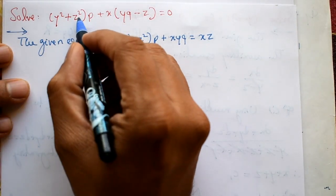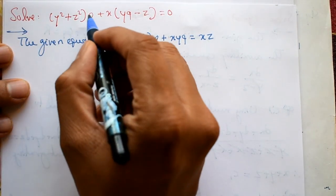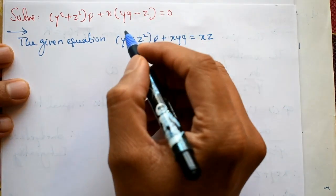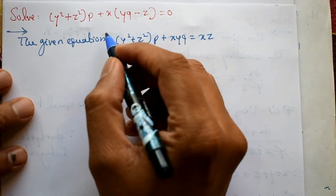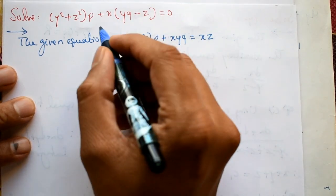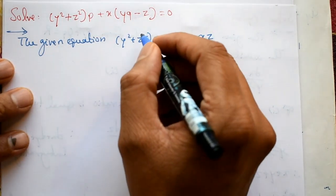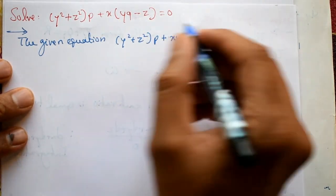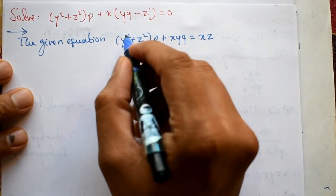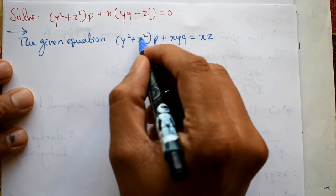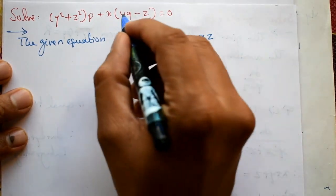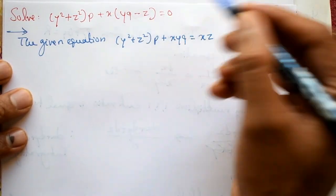Solve y² + z² into p + xy·q minus z equal to 0. We need the general solution of this PDE. This is a Lagrange's linear PDE. The given equation is written in the form: (y² + z²)p + xy·q = xz.